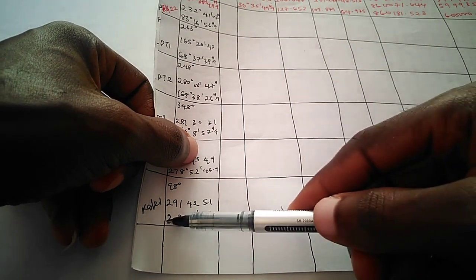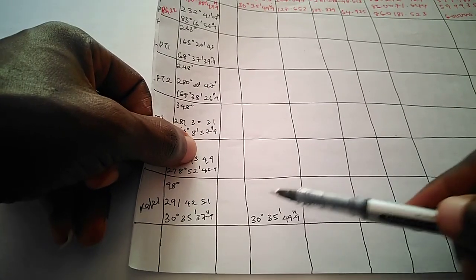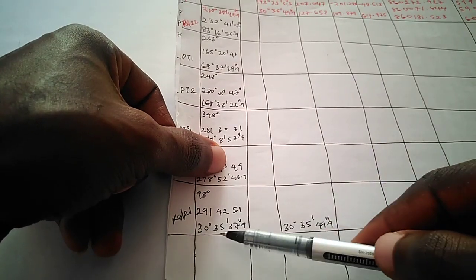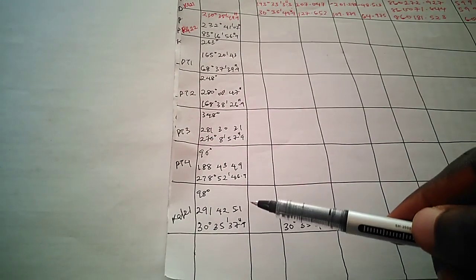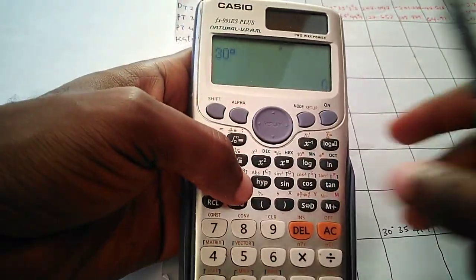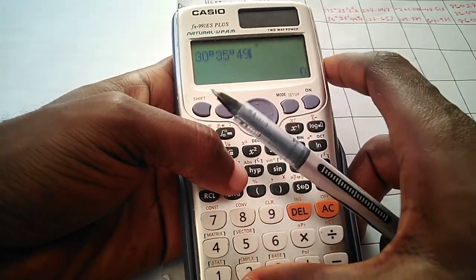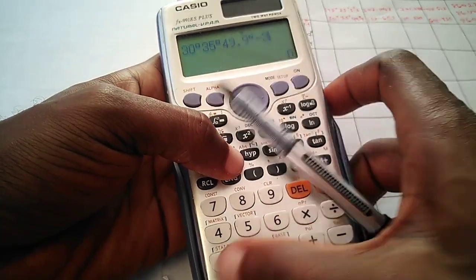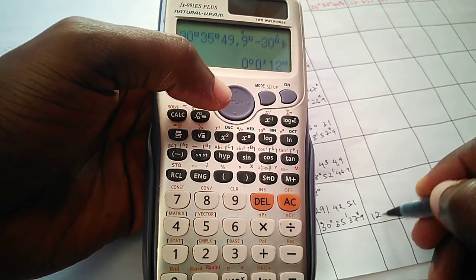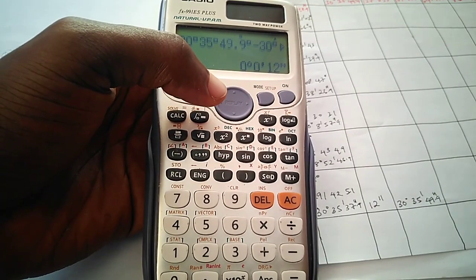Now we want to determine our error. We are supposed to have 30 degrees 35 minutes 49.9 seconds, but we got 30 degrees 35 minutes 37.9 seconds. We find the difference: 49.9 minus 37.9 gives us a difference of 12 seconds.